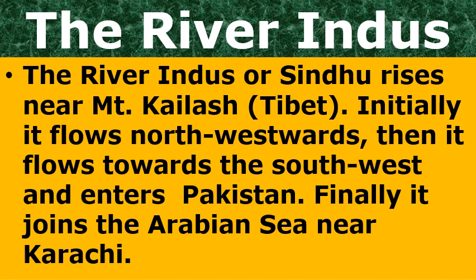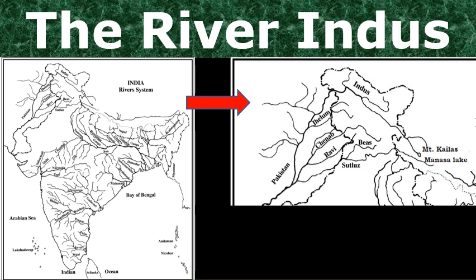River Indus is also known as Sindhu. This Sindhu River rises near Mount Kailash — it is in Tibet, today occupied by China. Initially it flows northwestwards, then it flows towards southwest and enters Pakistan. Finally, it joins the Arabian Sea near Karachi in Pakistan. I am showing you River Indus in this map of India — this map is also given in your textbook. River Indus rises at Mount Kailash, shown with a red arrow on the map, and enters Pakistan.